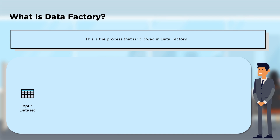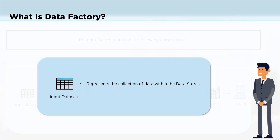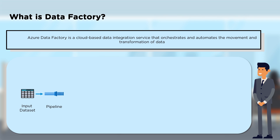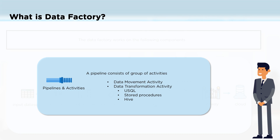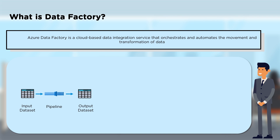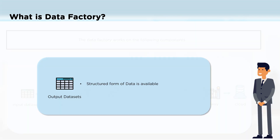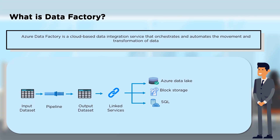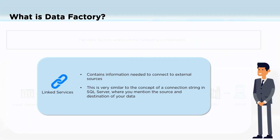Let's see how the flow of its processes work. First we have the input data set — the data within your data store that you need processed. You pass this data through a pipeline, which performs an operation on the data that transforms it — anything from data movement to data transformation. Data transformation is possible with the help of U-SQL, stored procedures, or Hive. After this you get an output data set in structured form, which is then given into linked services like Azure Data Lake, block storage, or SQL.